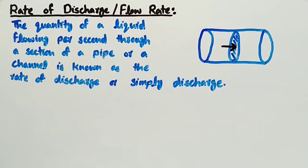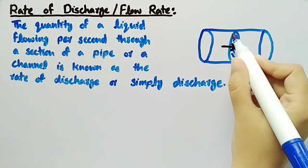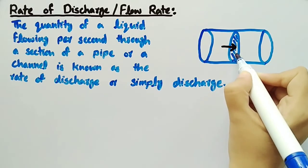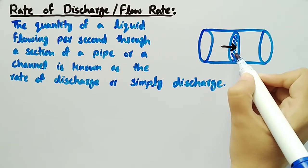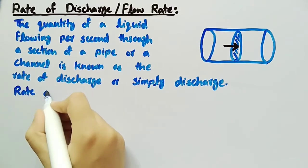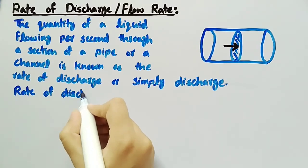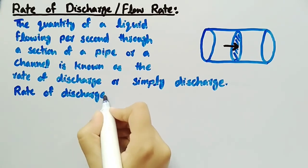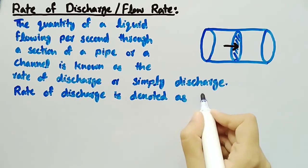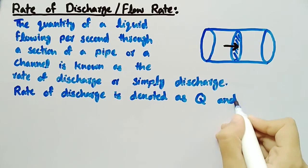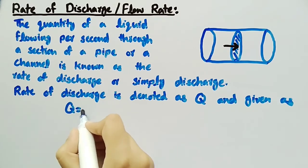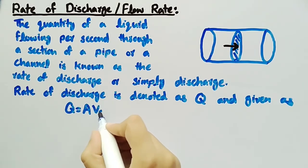For example, if we consider a small section of a pipe, then the quantity of a liquid flowing per second through this section of a pipe is known as the rate of discharge. Rate of discharge is denoted as Q and given as Q is equal to A times V_av.